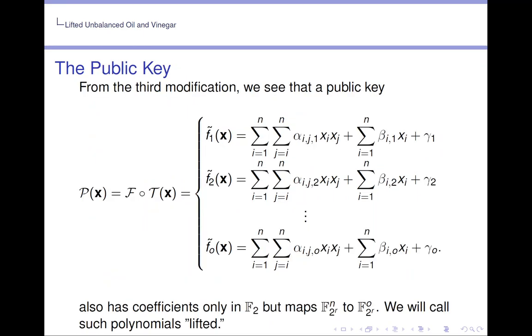From the third modification, we see that the public key P equals F composed with T also has coefficients only in F_2, but maps F_{2^r}^n to F_{2^r}^o. We will call such polynomials lifted.